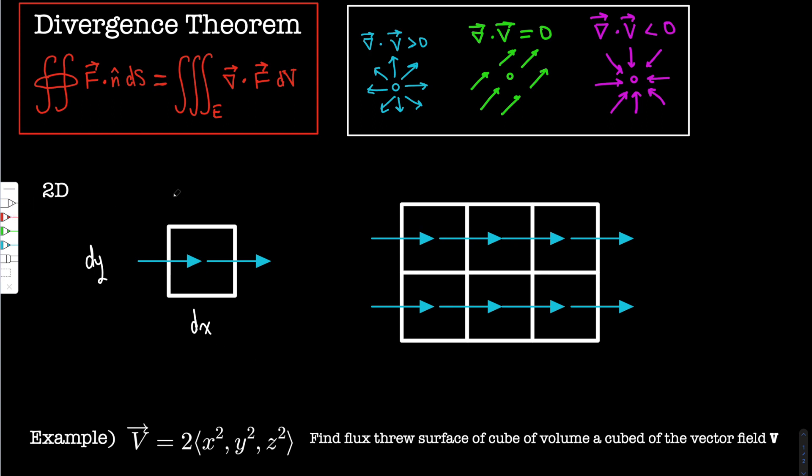Flux usually is denoted by capital Phi, and that's basically if you have some surface, it's a measure of how much field penetrates that surface. So if you have some field that looks like this, it would tell you how much of this field penetrates the surface.